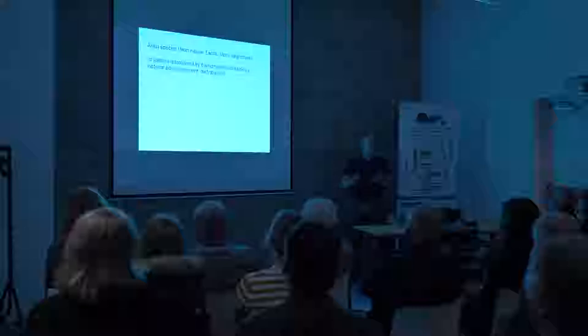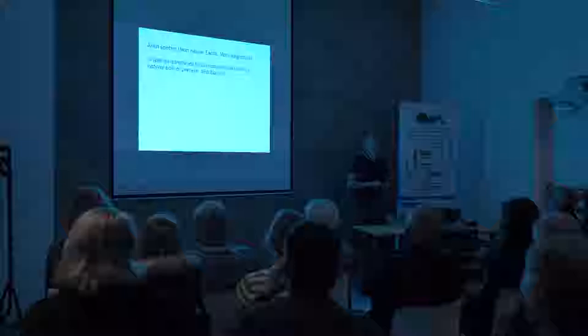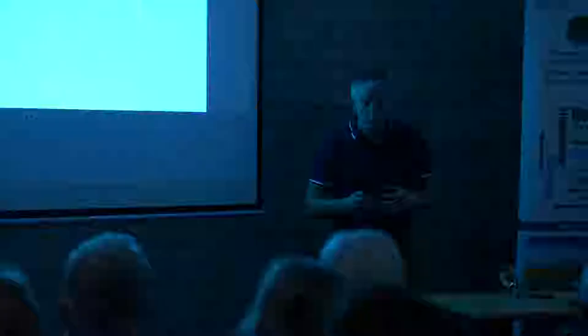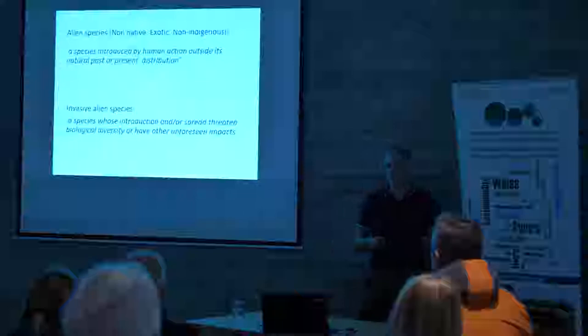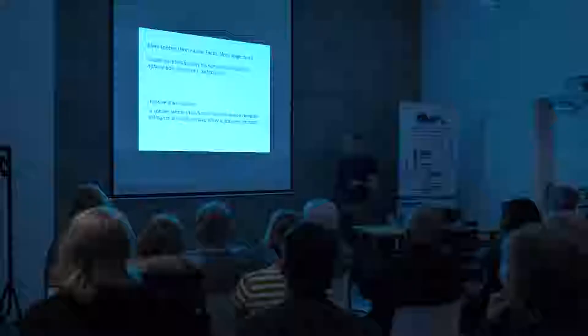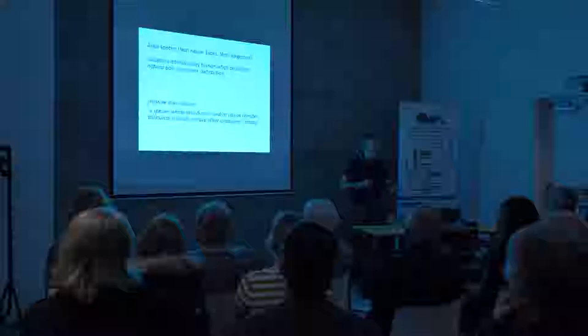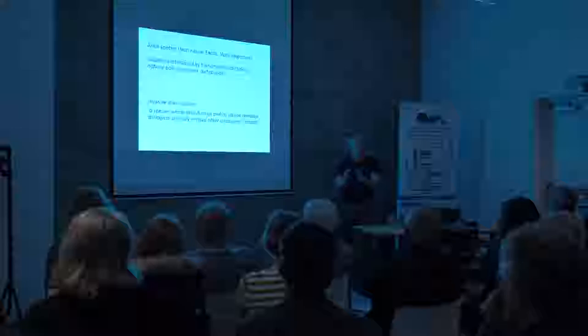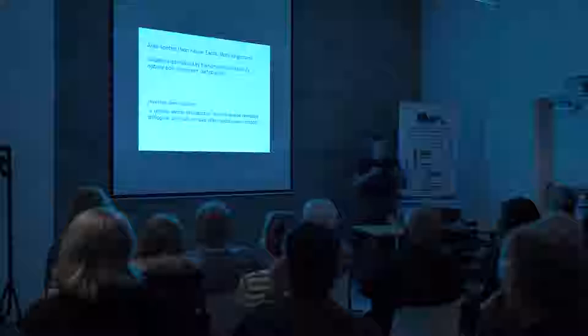We're not talking about range extensions of species through, for example, changing climate. We're talking about human vectors — transport mechanisms like shipping or aircraft — that have moved organisms around the planet. They occur in terrestrial, freshwater, and here I'm focusing on the marine environment. You'll also come across the term 'invasive.' Invasive alien species means that the species introduced threatens local biological diversity or has some unforeseen impact — economic or otherwise — because it's proliferated and become super abundant.